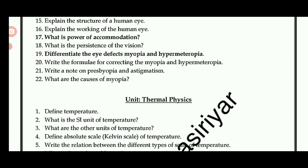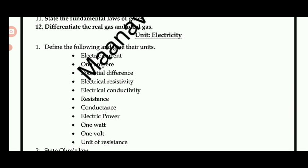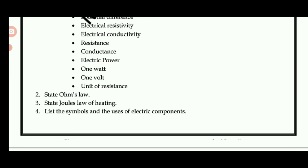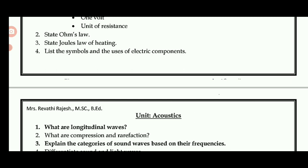Physics and chemistry are manageable, but thermal physics requires more concentration. Important topics include: define 1 calorie and 1 kilocalorie, the fundamental law, and differences involving real gases. For electricity, important topics are: define 1 volt, unit of resistance, electric power, state Ohm's law, and state Joule's law of heating. Also, list out the symbols of common electric components.